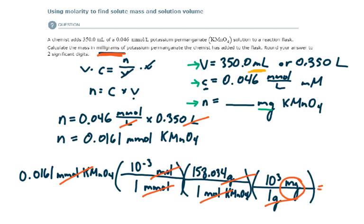So now we put it into the calculator and get our final answer and round it to two significant digits. As a calculator answer, I get 2.544 milligrams of solute potassium permanganate. And it needs to be rounded to two significant digits, so this would round to 2.5 milligrams.